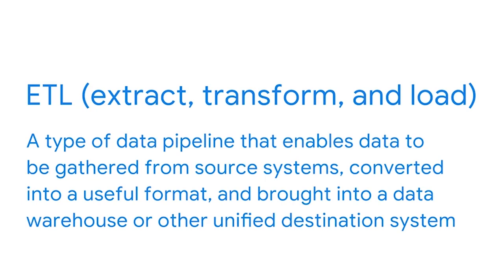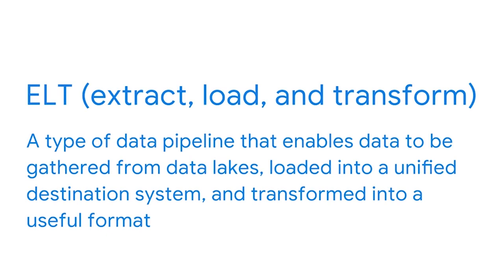One way to integrate data lakes into a data system is through ELT. Previously, we learned about the ETL process, where data is extracted from the source, transformed while being transported, and then loaded into its destination. ELT takes the same steps but reorganizes them so that the pipeline extracts, loads, and then transforms the data. ELT is a type of data pipeline that enables data to be gathered from different sources — usually data lakes — then loaded into a unified destination system and transformed into a useful format. ELT enables BI professionals to ingest many different kinds of data as soon as it's available, reduces storage costs, and enables businesses to scale storage and computation resources independently.